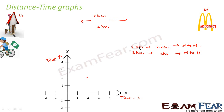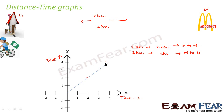So what it says is that in the first 2 hours it travels 2 kilometers; in the next 2 hours it again travels 2 more kilometers. So the next 2 kilometers would bring us to the 4-kilometer mark at the 4-hour point, and that point will come somewhere here on the graph.